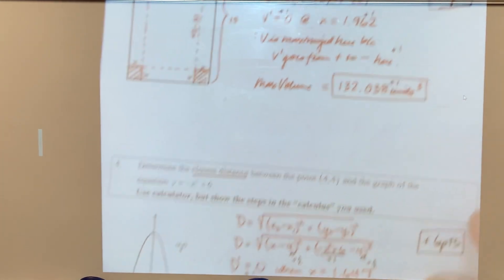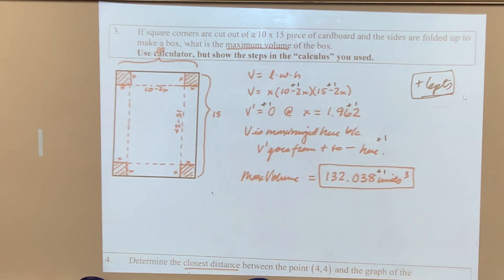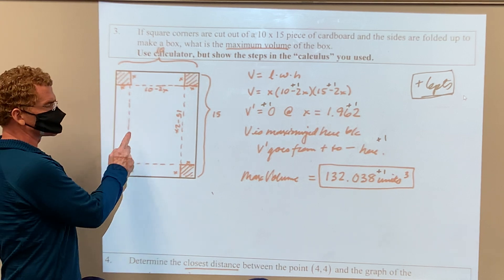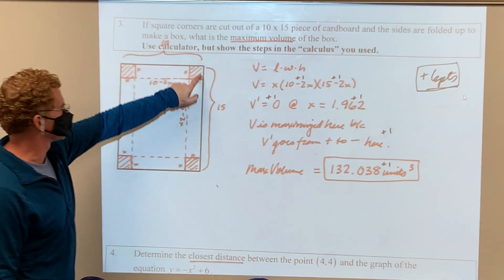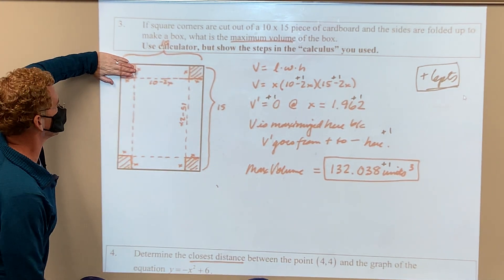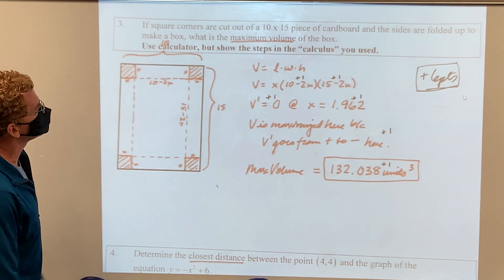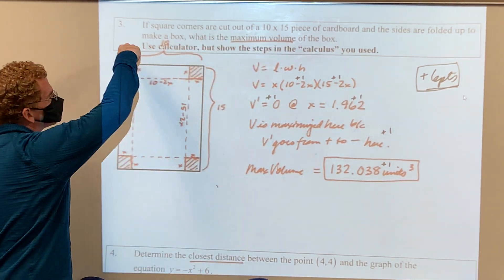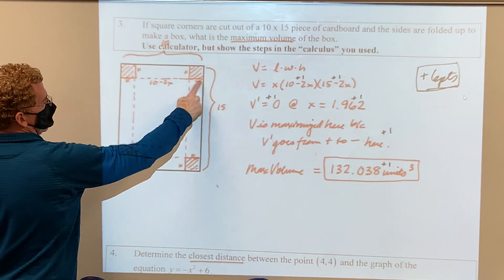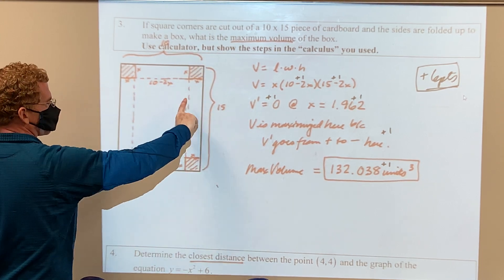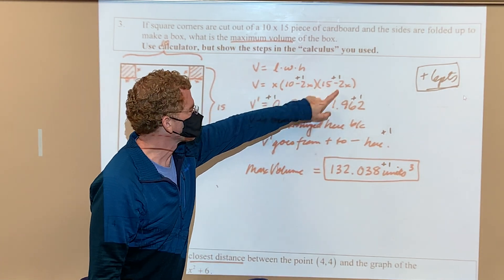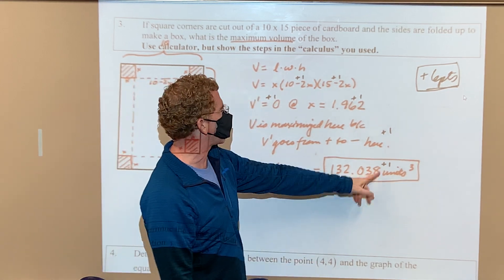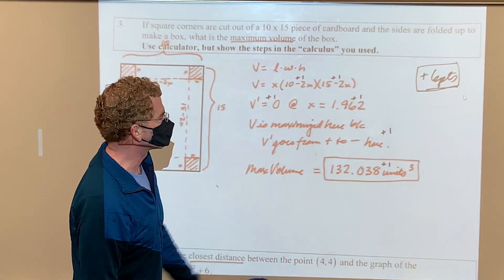Shifting to the optimization stuff—and on the quiz I gave you today, it was all optimization—but don't forget about tangent line approximation; study for that on your test on Tuesday. On this one, it said if square corners are cut out—so the red is gone—and then along the dotted lines I'm folding it up. It said a 10 by 15 piece of cardboard—so that's 10, that's 15—if each of those are x's, that's 10 minus 2x. Every year I have somebody write 10 minus x and lose those two points.